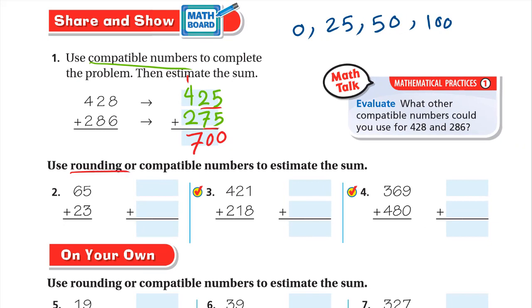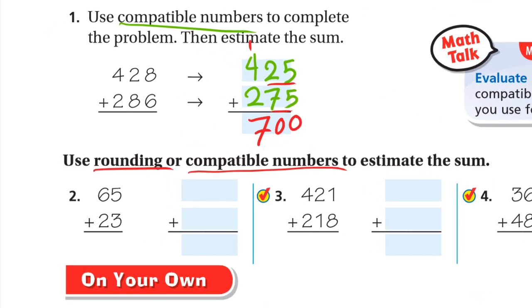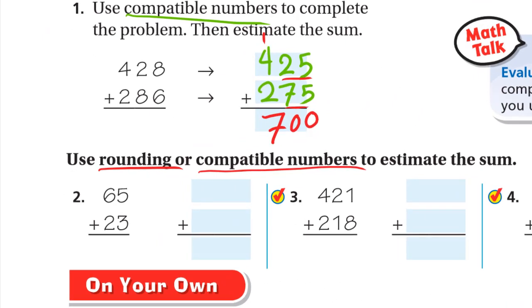Here, use rounding or compatible numbers to estimate the sum. We'll use rounding or compatible numbers, whatever you want. At number 2, we'll use rounding. So rounding here, the 6 will be 60 or 70. Look at the 5. The 5 is one of the strong digits, so it will be 70. Here the 20 will be 20 or 30. Look at the 3, the 3 is weak, so we keep it 20. Now we add 70 plus 20 is 90.